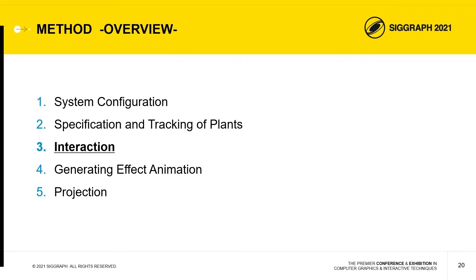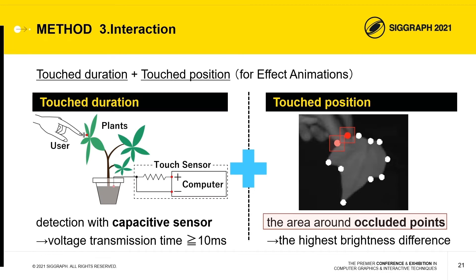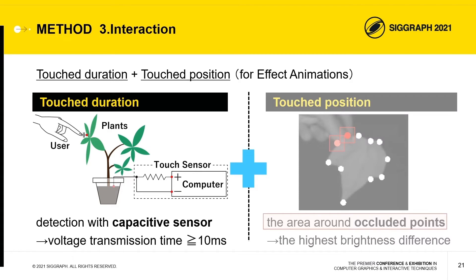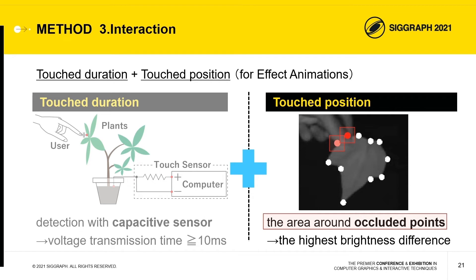Next, we'd like to talk about the interaction system. Touched duration and touched position are detected for generating interactive effect animations. Touched duration is detected with a capacitive sensor by measuring the times for transmission and reception of voltage. When the user touches the plants, the transmission time increases because the capacitance increases. Touches are detected if the transmission and reception time exceeds 10 ms. The touched position is detected among the occluded points — specifically, the occluded points with the highest brightness difference in the surrounding area are considered the touched position.